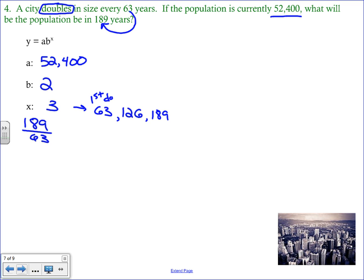If you're not quite sure how to divide or what to divide, just kind of think about how many doubling periods there were and just start listing it out. So every 63 years, you just add 63 years until you get to the desired number.